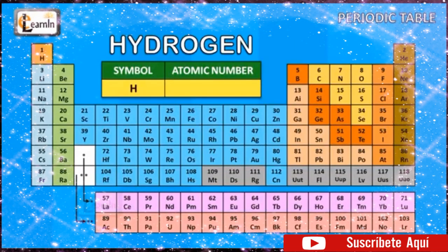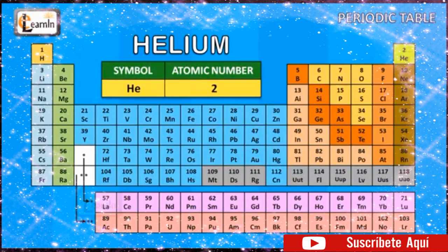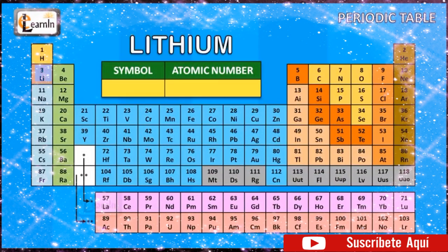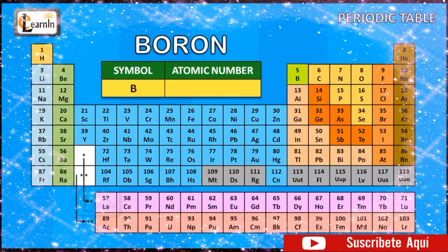The element hydrogen is represented as H and has an atomic number of 1. The element helium is represented as He and has an atomic number of 2. The element lithium is represented as Li and has an atomic number of 3. The element beryllium is represented as Be and has an atomic number of 4. The element boron is represented as B and has an atomic number of 5.